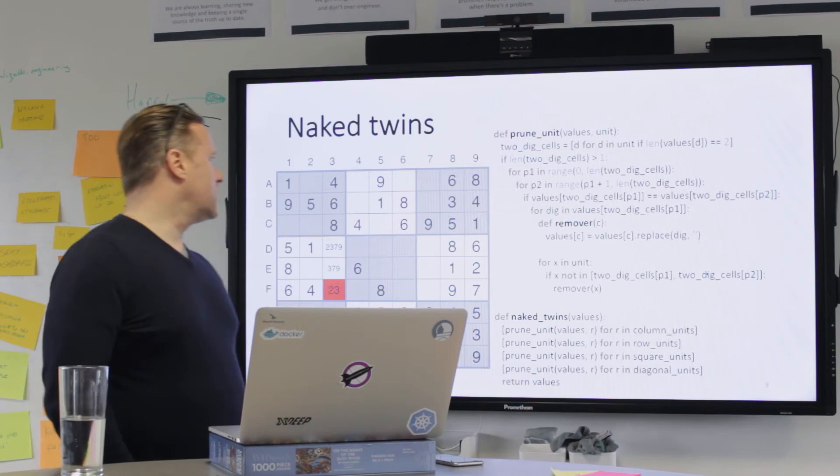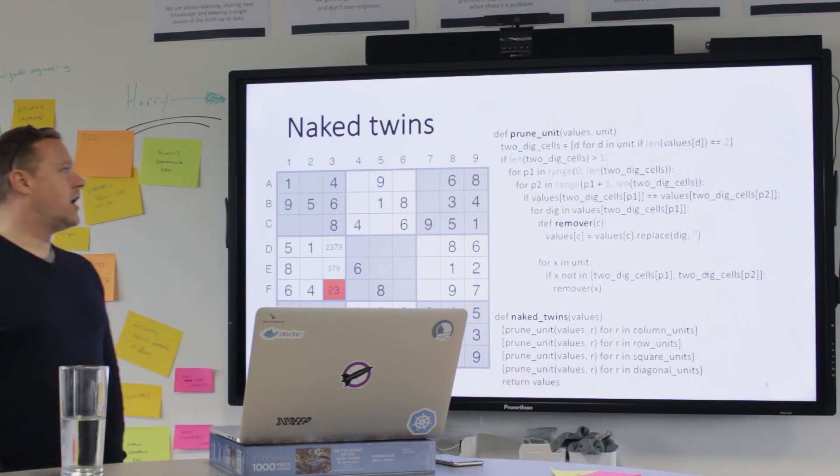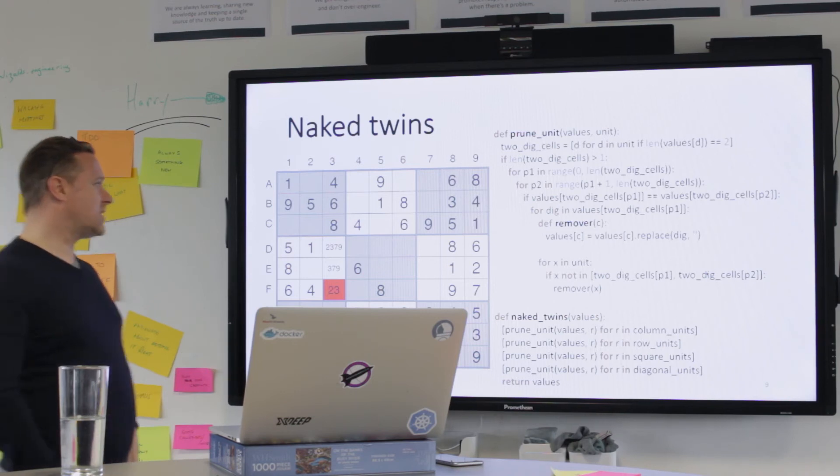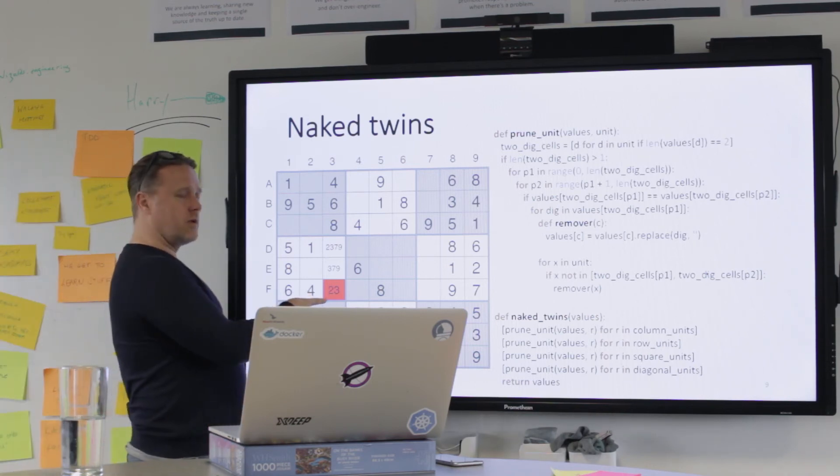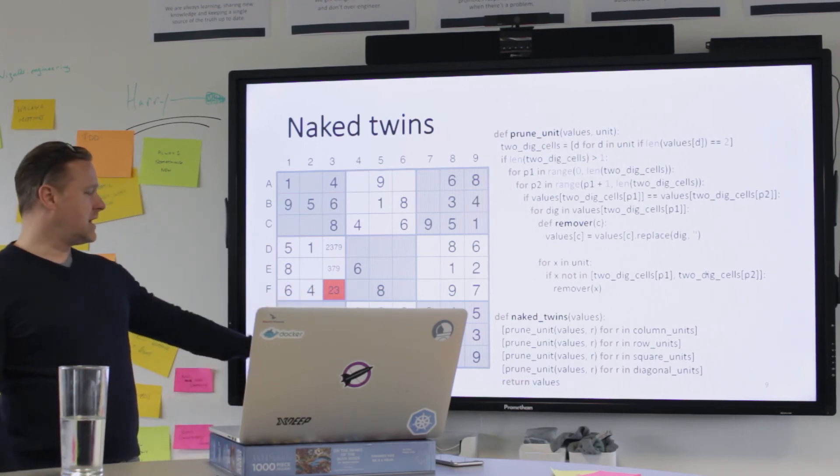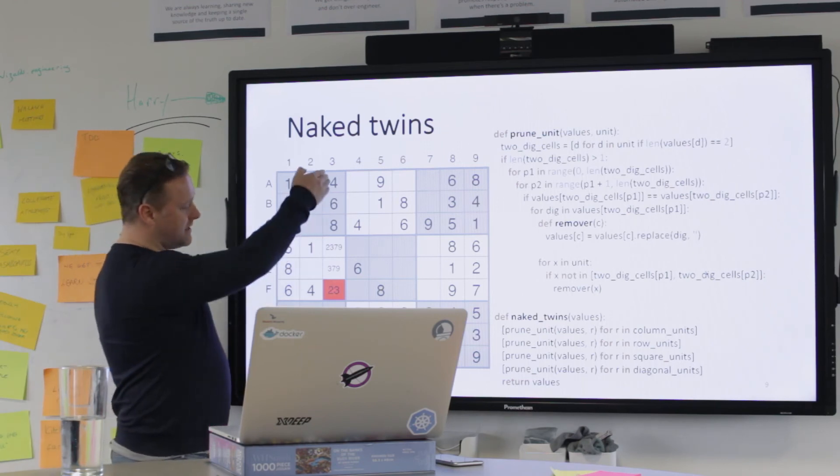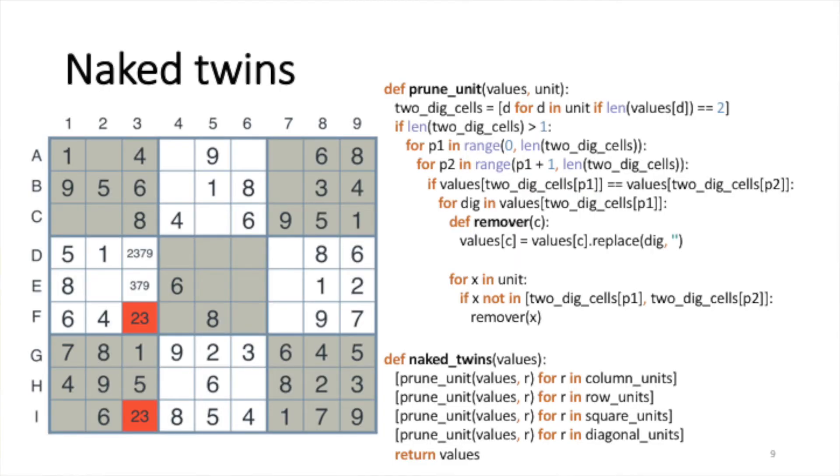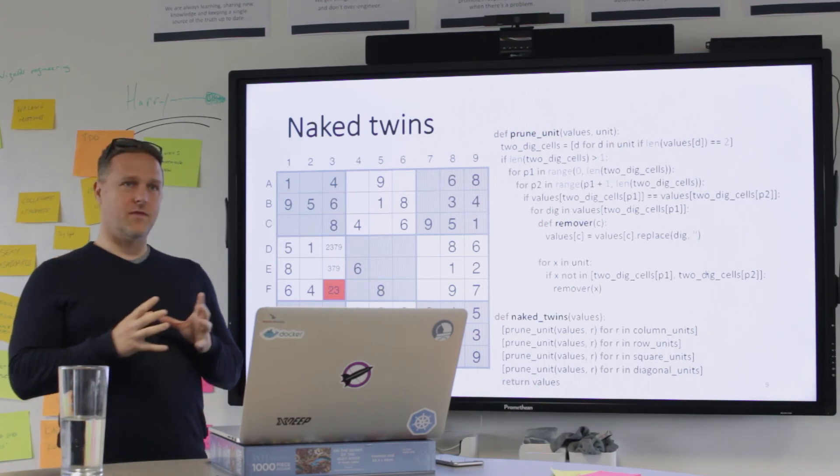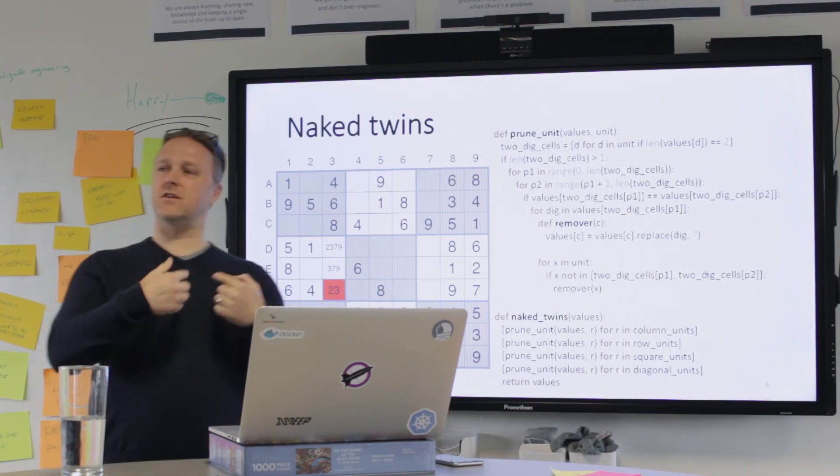So there's this other strategy that we came up with called Naked Twins. I don't know if you ever use this one when you're doing Sudokus yourself, but if there's not an only choice here and there's not an only choice there, but you know that this can only be a two or a three and that can only be a two or a three, then that means that everything else in the unit where these two live can no longer be a two or a three. So we remove two and three from there. We remove three from there. And that probably kickstarts the process again. So we can go around only choice and eliminate and only choice and eliminate for a while.